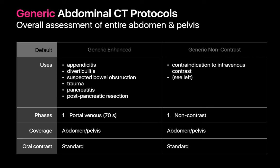Generic abdominal CT protocols can provide an overall assessment of the abdomen and pelvis as a whole and are not specifically tailored to any organ in particular. Generic enhanced abdominal pelvic CT protocols are usually a single phase scan during the portal venous phase of enhancement, with standard oral contrast typically administered unless there's a contraindication. They are commonly used when patients are being worked up for appendicitis, diverticulitis, bowel obstruction, trauma, pancreatitis, and post-op pancreatic surgery. In situations where a contraindication to intravenous contrast exists, this protocol may be performed without intravenous contrast.